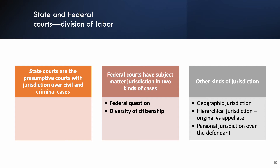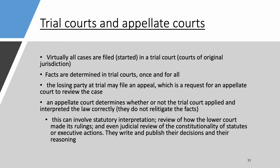Jurisdiction can mean geography — meaning the crime or civil case arises within the state or federal judicial district a court controls. It can also mean hierarchical, meaning original jurisdiction versus appellate. Original jurisdiction is where you file the case first; appellate jurisdiction is where you go if you appeal a loss. There's also personal jurisdiction — the court's power over the defendant. But really, hierarchical jurisdiction is just division of labor between trial courts and appellate courts.